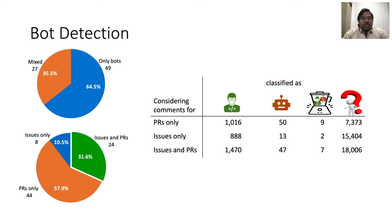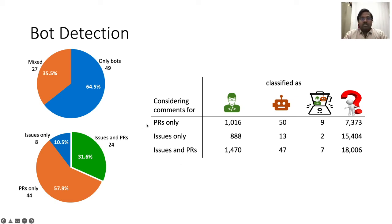For bot detection statistics, we found around 76 bot accounts present in at least one category. The categories are: comments posted only in pull requests, comments posted only in issues, and comments posted in issues and pull requests together. Accounts are classified as human, bot, mixed, or unknown. The mixed category means an account is classified as a bot when considering pull request comments but as a human when considering only issue comments — reflecting bot-like behavior in pull requests and human-like behavior in issues.